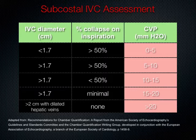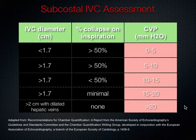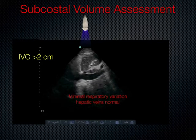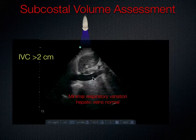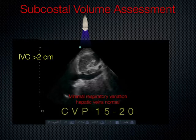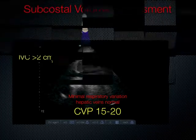Even patients with high CVPs can be quite hypotensive. In the setting of hypotension, the reflex is often to give more fluids, but a plethoric IVC tells you there's another cause — not hypovolemia. This IVC assessment is very important in resuscitation. In this example, the IVC is greater than two centimeters with very little change on respiration, indicating CVP greater than 15 to 20.